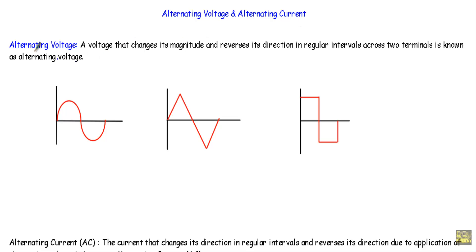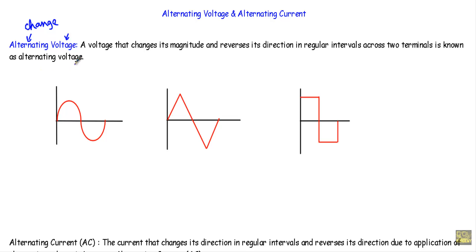Let me talk about alternating voltage. The word voltage refers to the amount of work to be done to move an electron from one place to another place in a circuit, and the word alternate means change. A voltage that changes magnitude and reverses its direction in regular intervals across two terminals is known as alternating voltage.